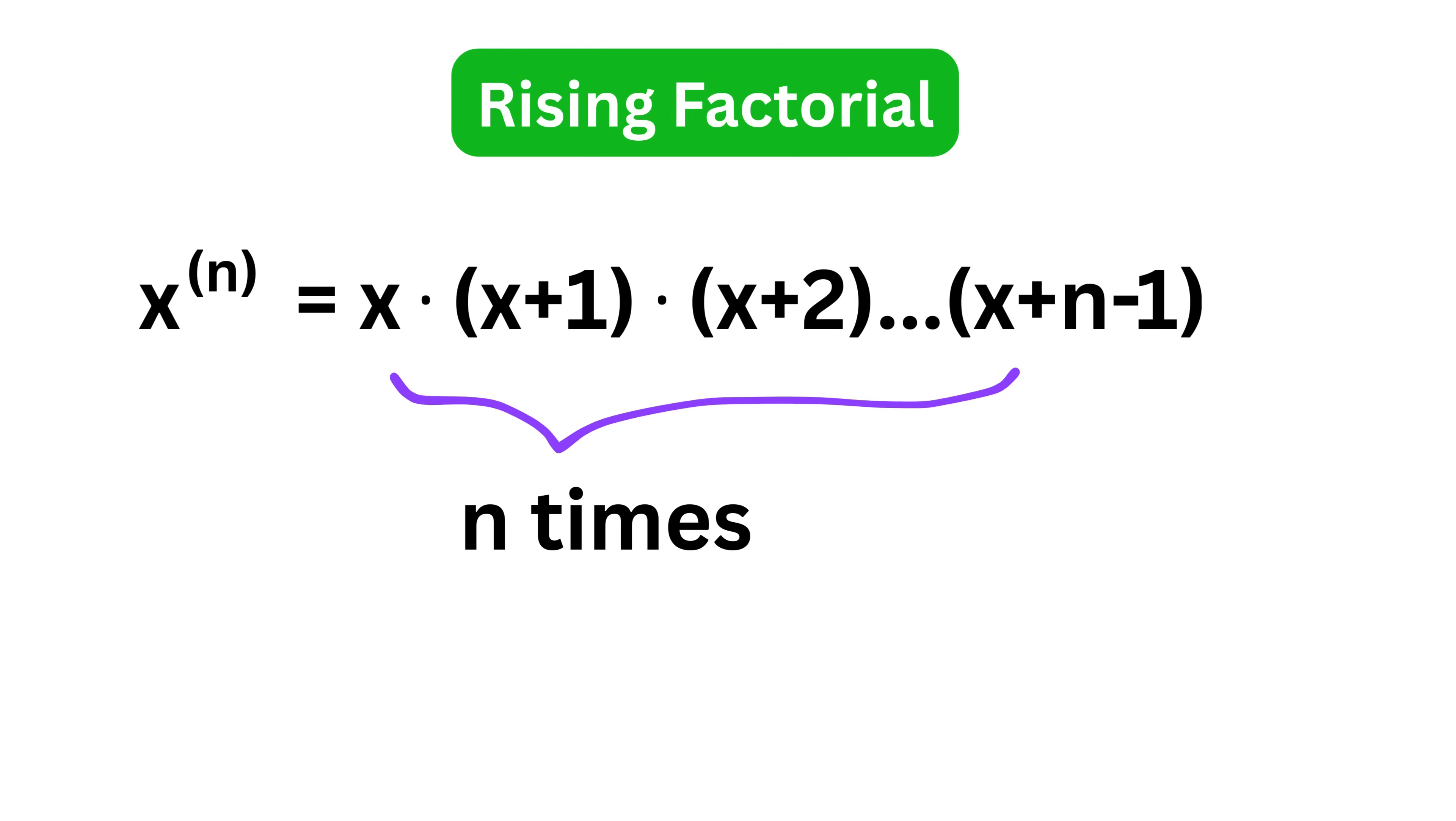Next up, we have rising factorial, which we denote like this. It means we multiply x times x plus 1 times x plus 2, and so on, until we do this n times in total.